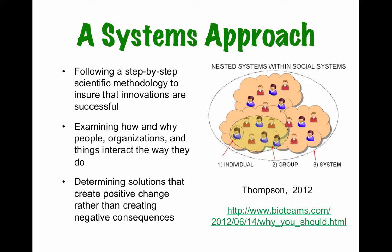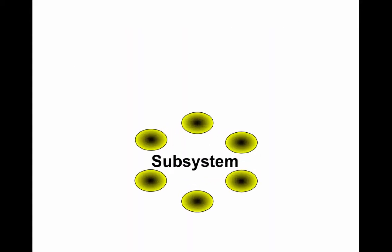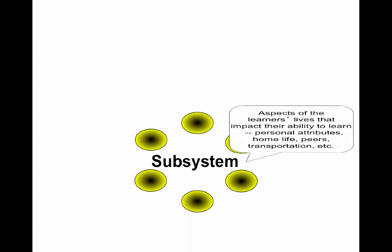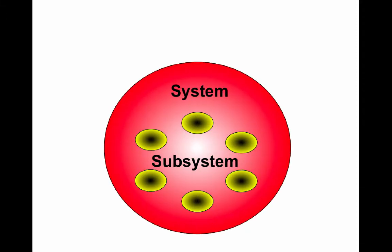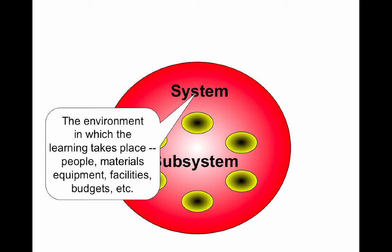Let's start with some important terms for doing a systems analysis. First is our sub-system — these are aspects of the learners' lives that impact their ability to learn, such as personal attributes, home life, peers, transportation, etc. Next is our system — this is the environment in which the learning takes place: people, materials, equipment, facilities, budgets, etc.